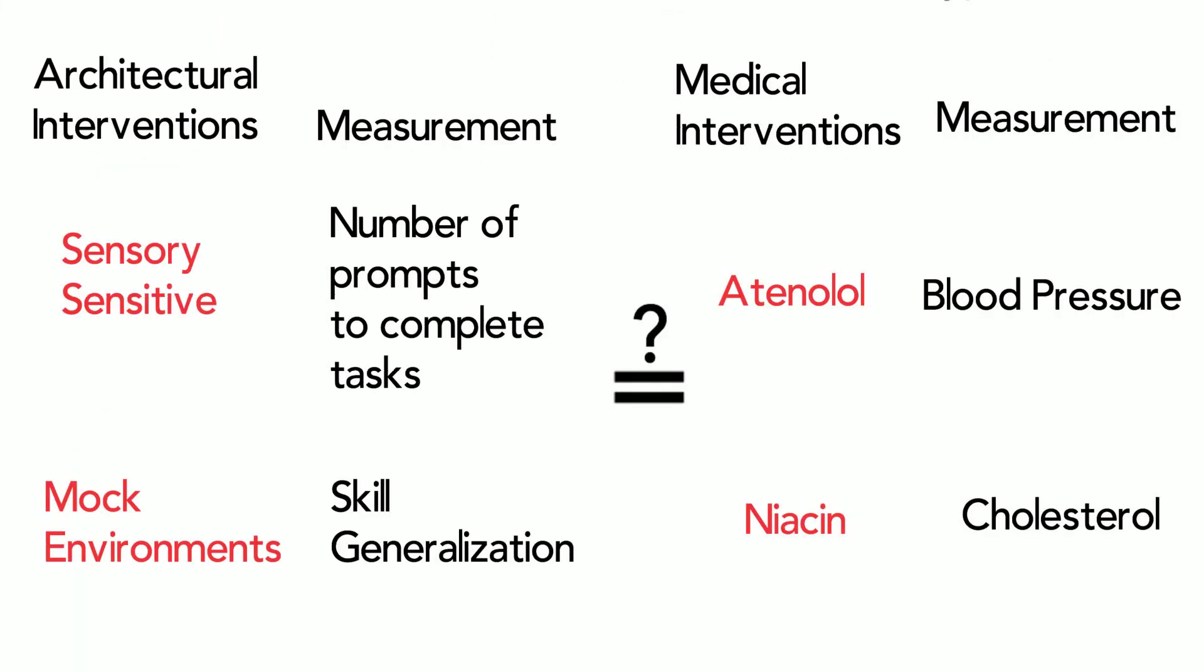So before we start waving research papers over our heads declaring we have the evidence of what autism design interventions work, we should pause and ask, what was measured? Was it a surrogate marker, and is it the architectural equivalent to atenolol or niacin?